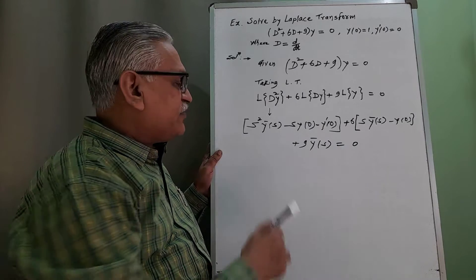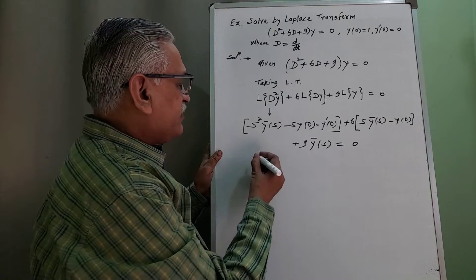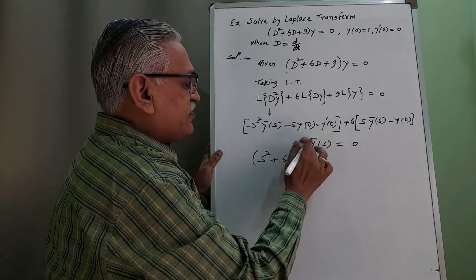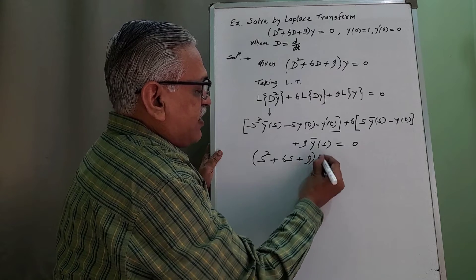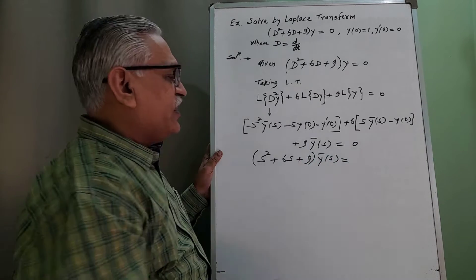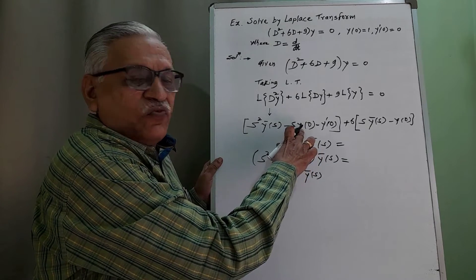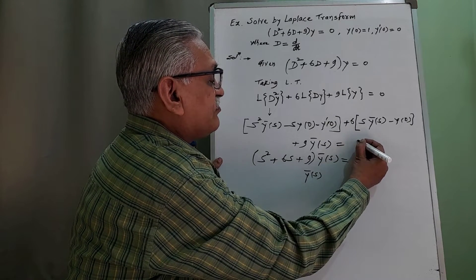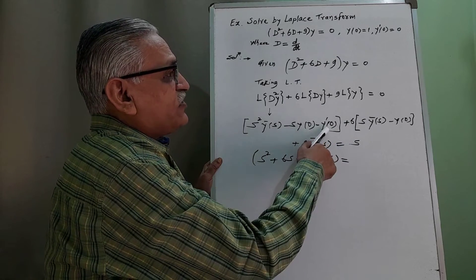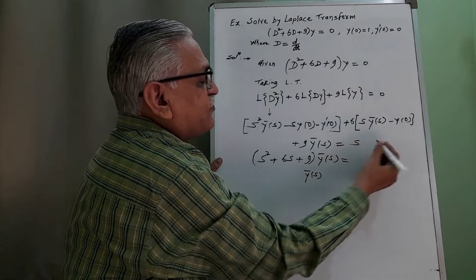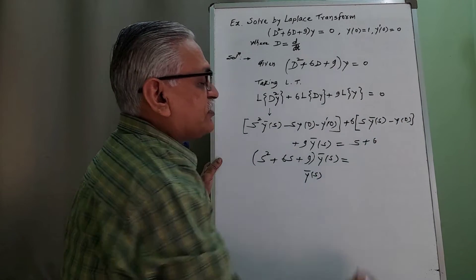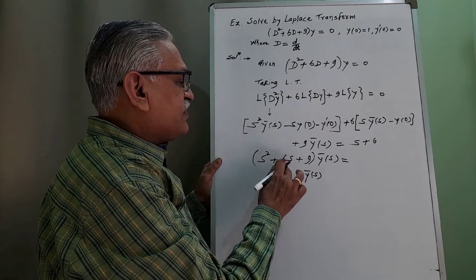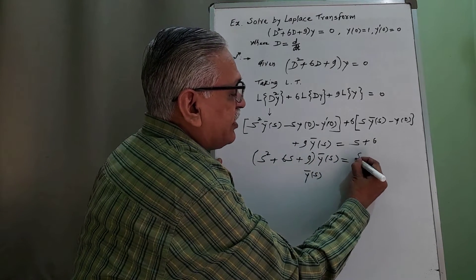Collecting the ȳ(s) terms, we get (s² + 6s + 9)·ȳ(s). Substituting y(0) = 1 and y'(0) = 0, the terms −s·y(0) and −6·y(0) move to the right-hand side, becoming +s and +6. Therefore the right-hand side becomes s + 6, giving (s² + 6s + 9)·ȳ(s) = s + 6.